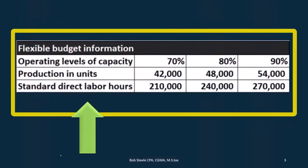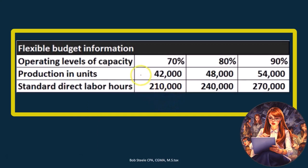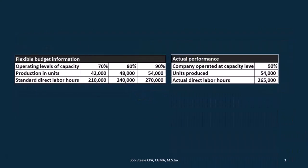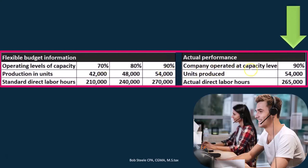When we think about variance analysis, we have to consider that we are going to be talking about a flexible budget. For example, if we had planned the budget at 70% capacity with production of 42,000 units and 210,000 hours, we would need to change that if we actually ran the process at 90% capacity, producing 54,000 units with actual labor being 265,000 hours.